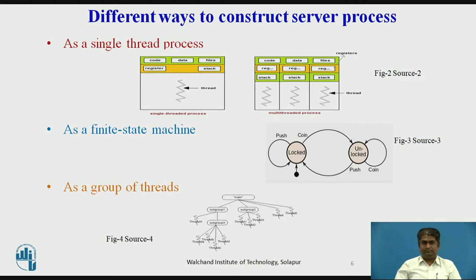The second model is as a finite state machine. This model supports parallelism but with non-blocking system calls. In this method, the server is implemented as a single-threaded process operated like a finite state machine. An event queue is maintained in which both client request messages and reply messages from the disk server are queued. Whenever the thread becomes idle, it takes the next message from the event queue. If it is a client request message, a check is made for access permission and need for disk access. If disk access is needed, the file server sends the disk access request to the disk server. However, instead of blocking, it records the current state of the client request in a table and then goes to get the next message from the event queue.